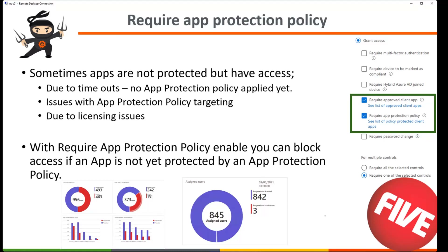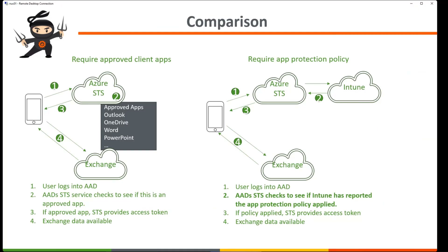Nowadays we can check if the app is actually reported as protected. Here you see the two controls in conditional access. The first one has been there for a long time — when the user logs into Azure AD, the Azure AD SDS checks if the app being used is on Microsoft's approved app list. If so, we get an access token and the user's app is allowed to contact the service and download, for instance, mail in Outlook.